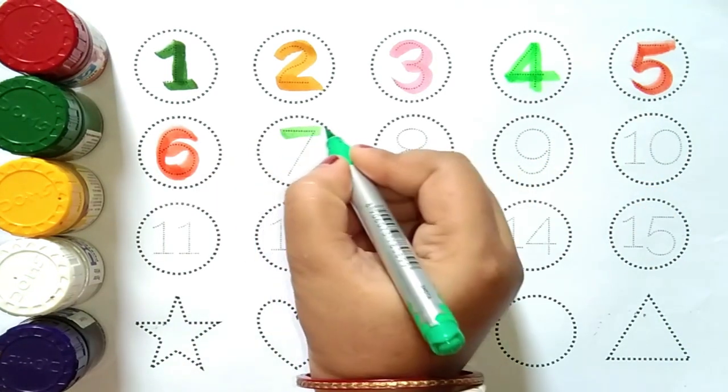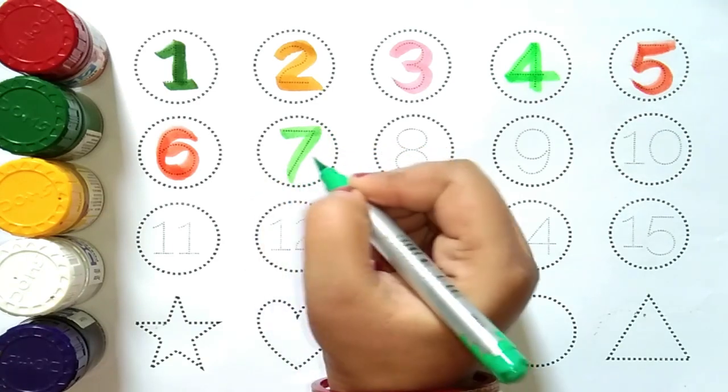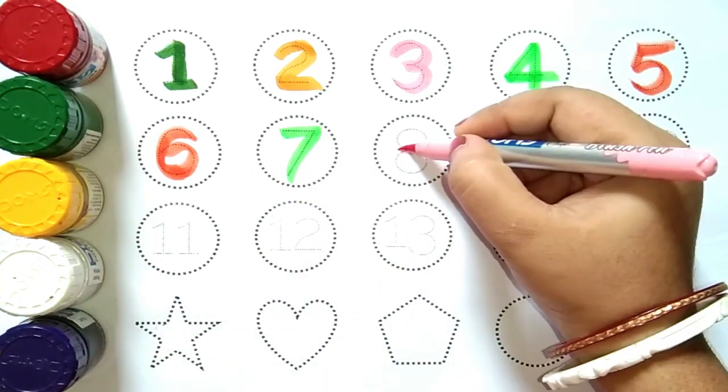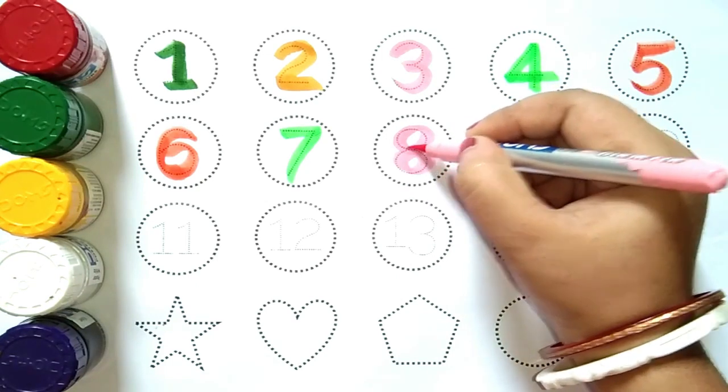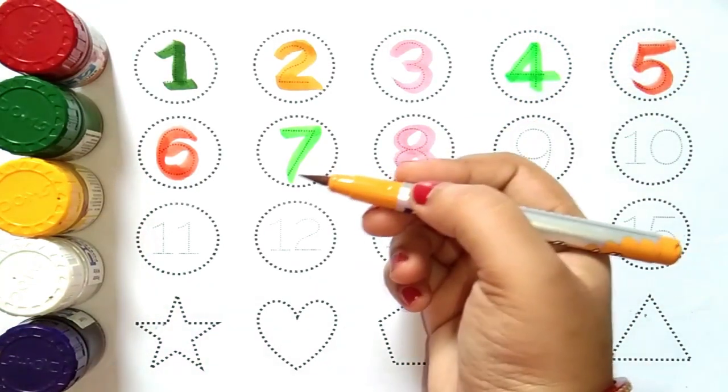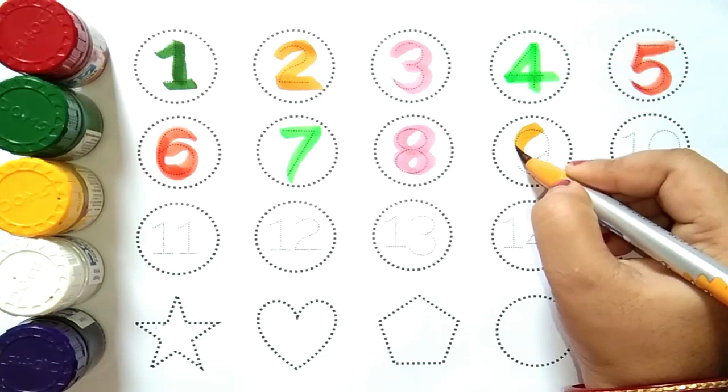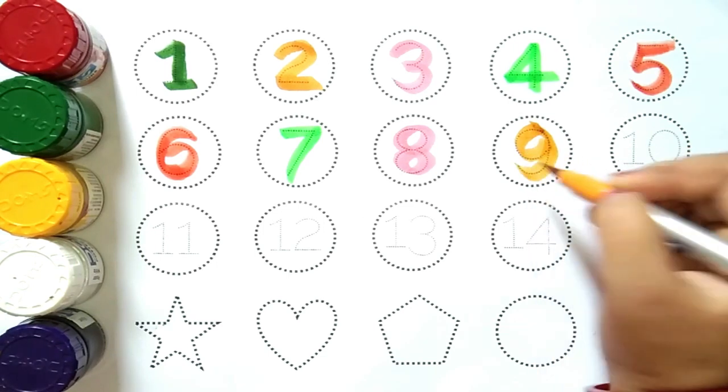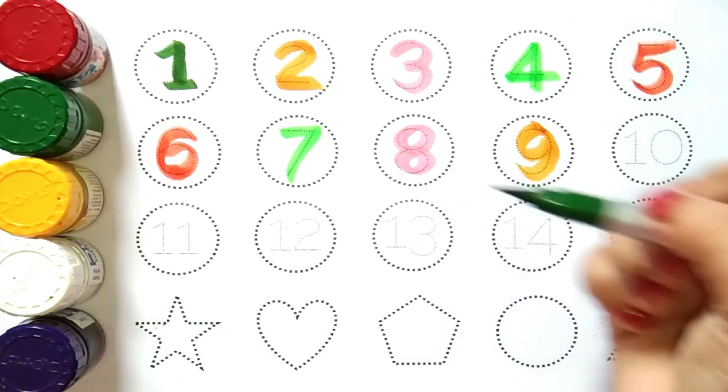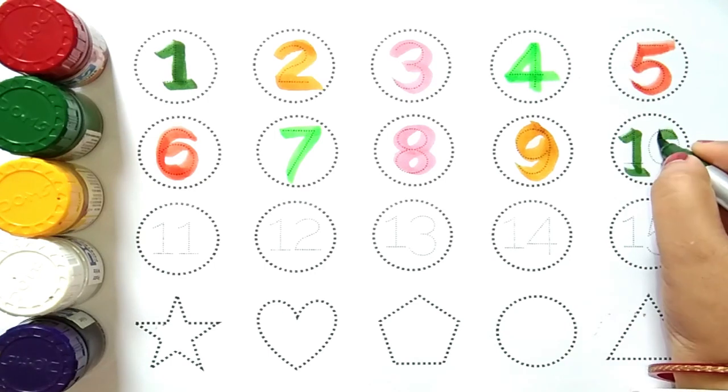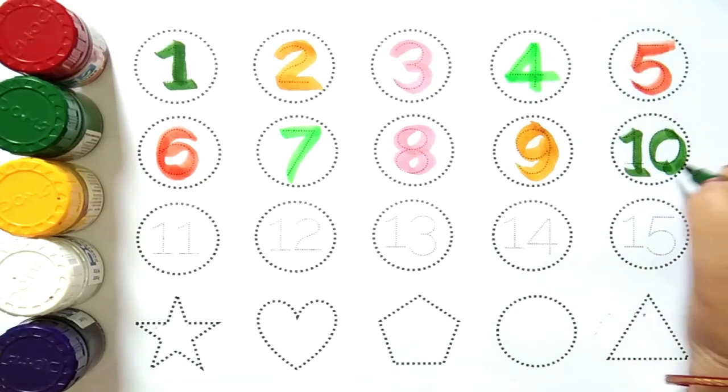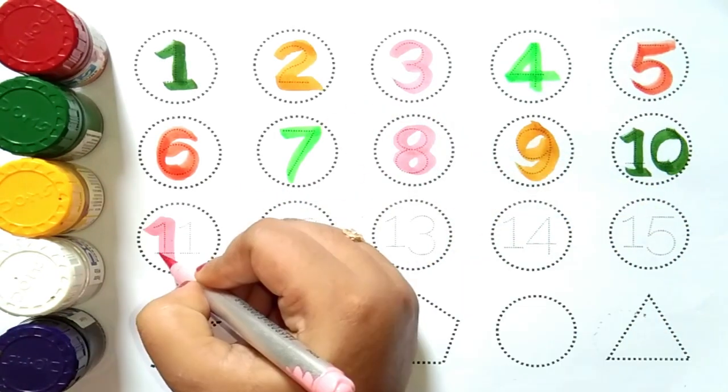Light green color, number seven, yeah! Number seven, light pink color. Number eight, yeah! Number eight, yellow color. Number nine, yeah! Number nine, green color. Number ten, yeah! Number ten, light pink color. Number eleven.